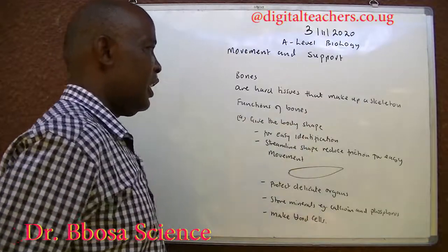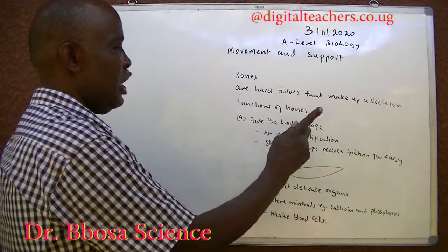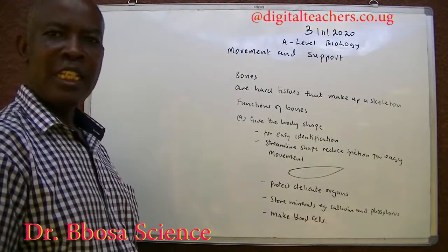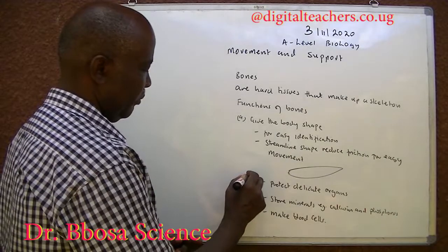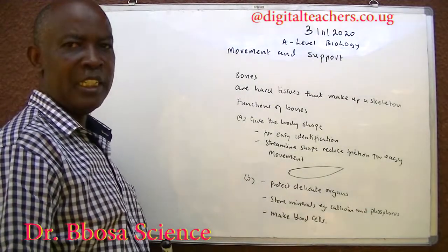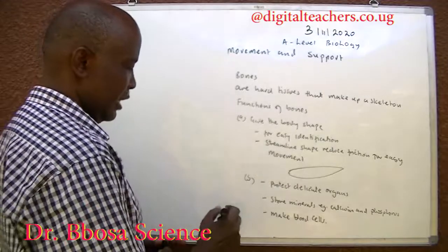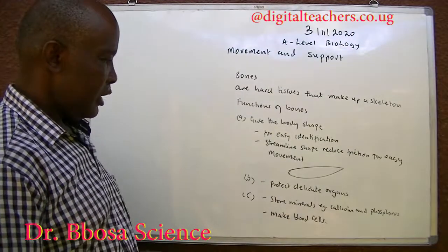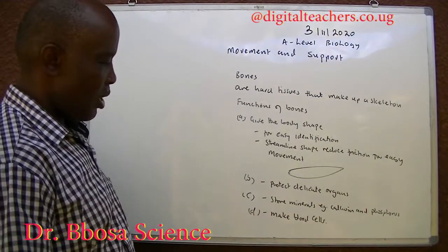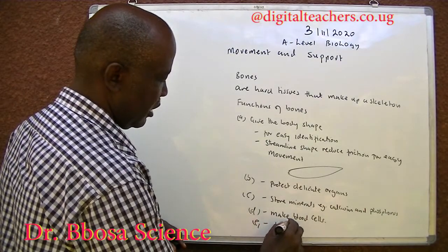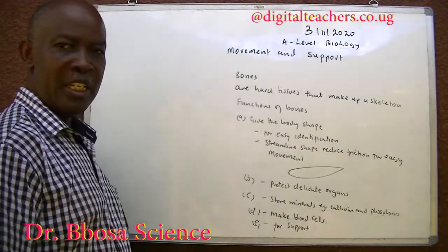Bones are hard tissues that make up a skeleton. Functions of bones: A. They give the body shape for its identification, such that animals of different species don't mate to waste gametes. B. Bones protect delicate organs — for example, the skull protects the brain, and the rib cage protects the heart and the lungs. C. Store minerals such as calcium and phosphate. D. Make blood cells. E. For support — bone provides support. Without support, movement is impossible.